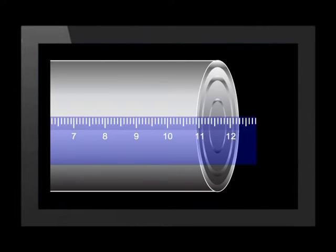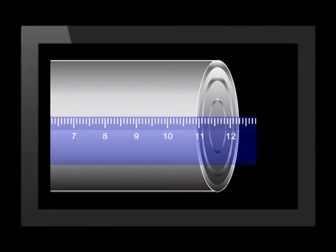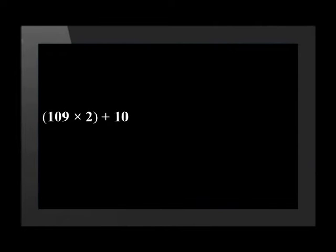We measure the height of the tin using the ruler again and we find the height to be 109 mm. As there will be two layers of tins in the box and provision must be made for a 10 mm space, the total height of the box is calculated as follows: 109 times 2, plus 10 for extra space, which equals 228 mm.